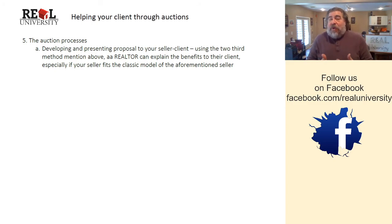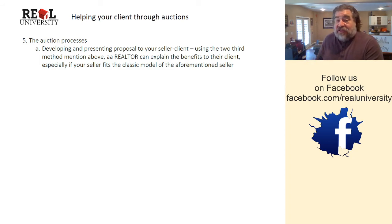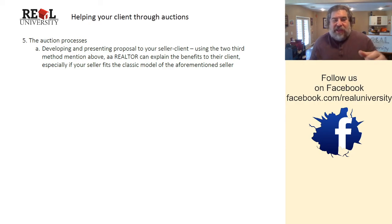Whatever element fits would be the one you'd key in on. For example: it's a vacant home, you've got high carrying costs, you're a motivated seller that needs income, and it's a relatively unique property with a diverse group of potential buyers. Those are the three elements that would make it a good auction property, and those same elements become your marketing points.